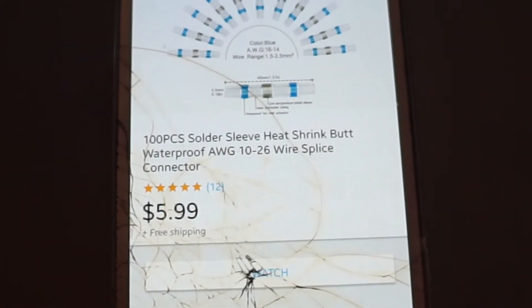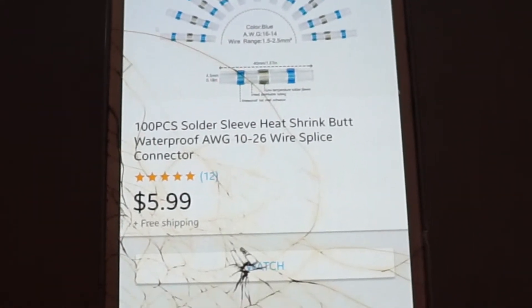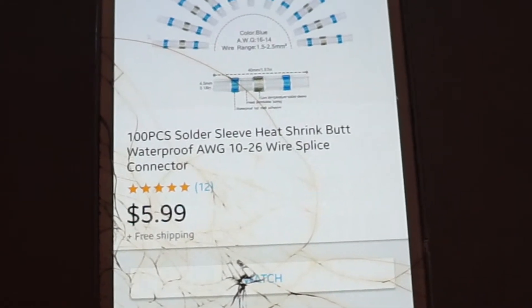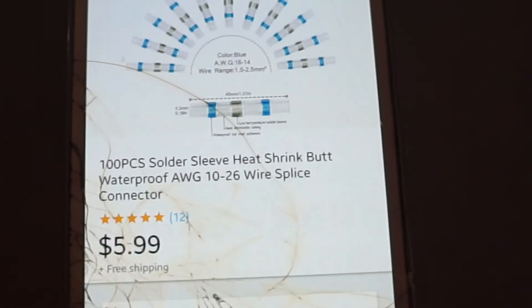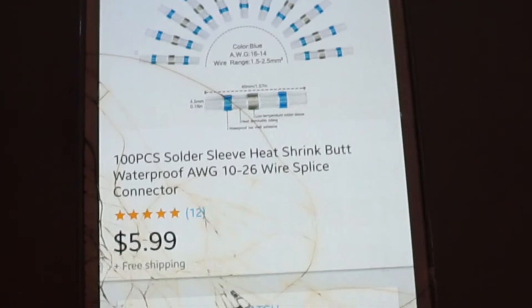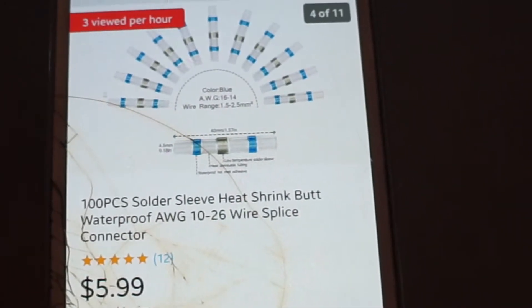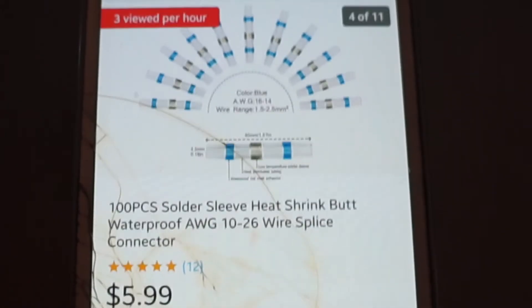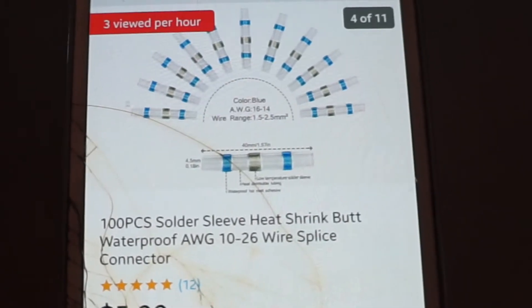Alright, I bought this set: 100 pieces solder sleeve heat shrink butt connectors. These are waterproof wire splicing connectors that are going to be hopefully useful in repairing a little wiring problem underneath the Mercury Mariner Hybrid.